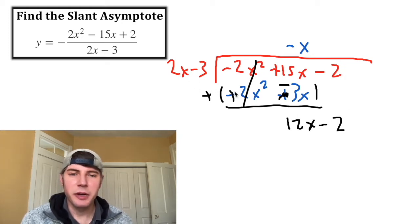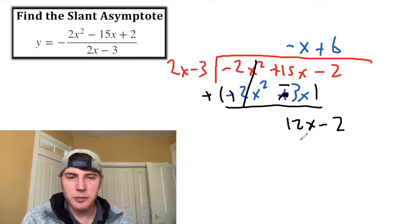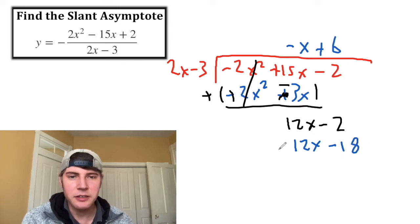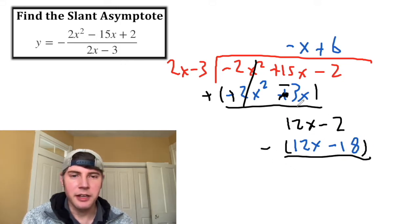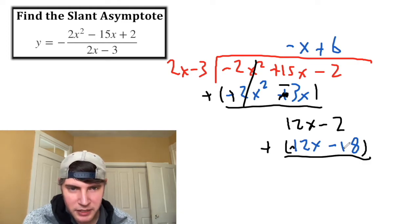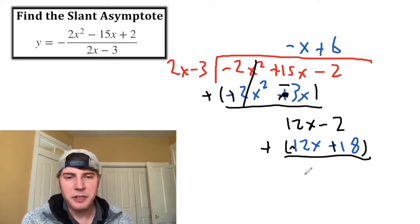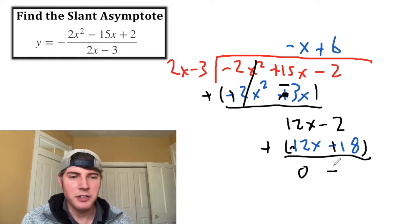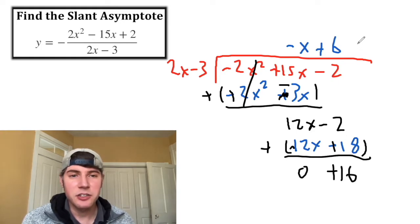Now, how many times does 2x go into 12x? It goes in 6 times. 6 times 2x is 12x, and 6 times negative 3 is negative 18. We subtract this blue line from the black line by distributing the negative, so this becomes negative and this becomes positive. 12x minus 12x is 0, and negative 2 plus 18 is positive 16. So the remainder is plus 16 over 2x minus 3.